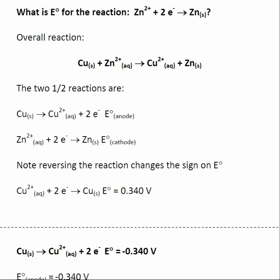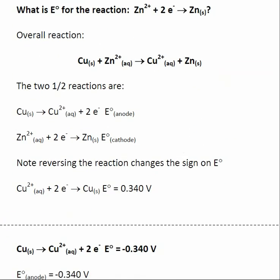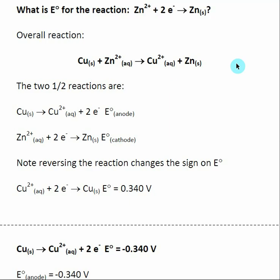The next thing I want to do is find the two half reactions going on in this redox reaction — we've also talked about that in a previous section. The two half reactions are: copper going to copper 2+ plus two electrons, and zinc 2+ gaining two electrons to become zinc solid.